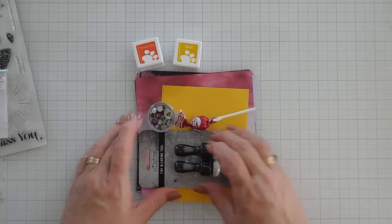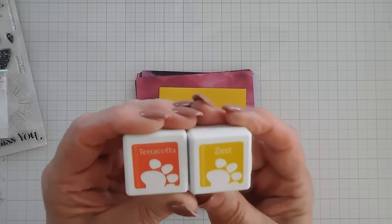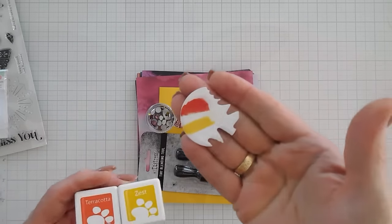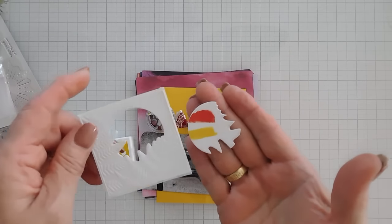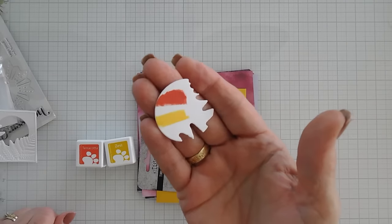And then we have some ink cubes. These are Simon's exclusive ink cubes. We have terracotta and we have zest. I use the negative piece from here to swatch. But those are pretty colors and they stamp beautifully.